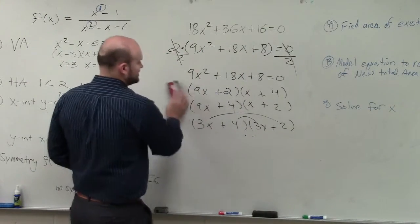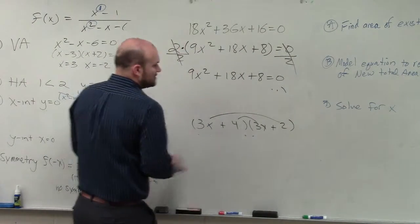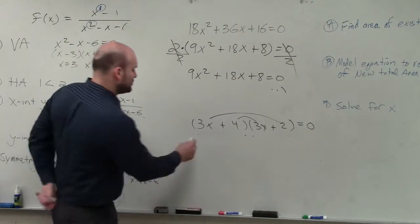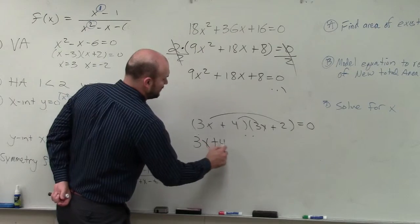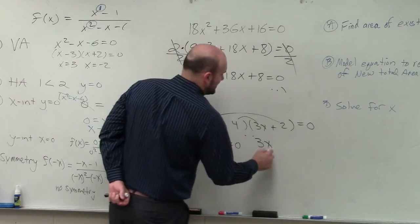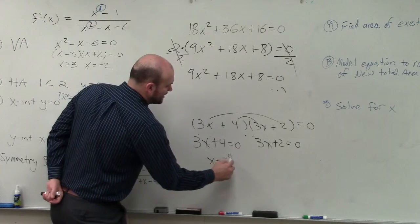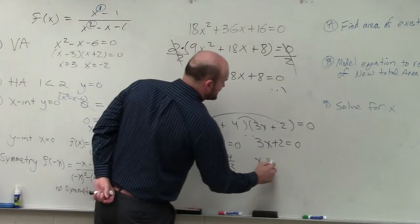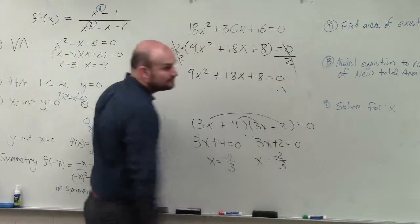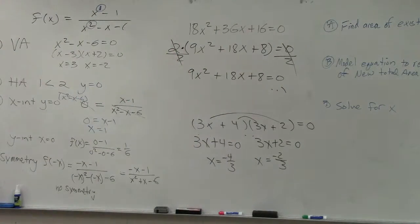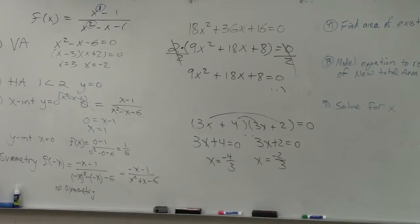So I can basically just erase these, set these equal to 0. And now I can just apply the zero product property. 3x plus 4 equals 0, 3x plus 2 equals 0. So solve: x equals negative 4 over 3, x equals negative 2 over 3. And that's it. Done. Anybody have any questions on that?